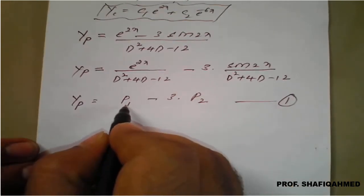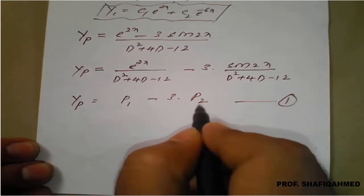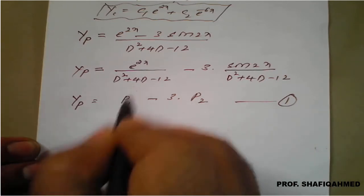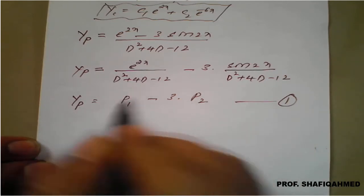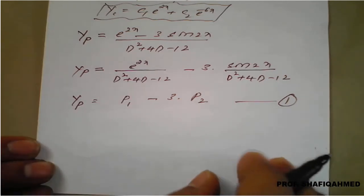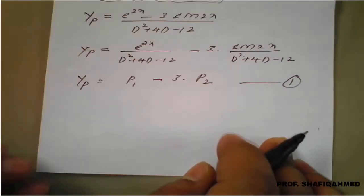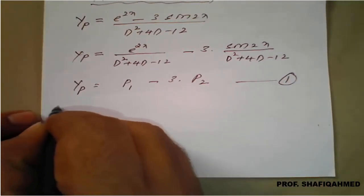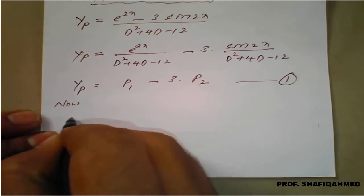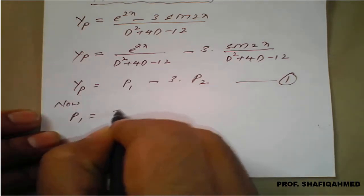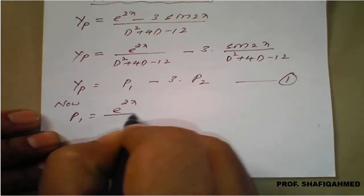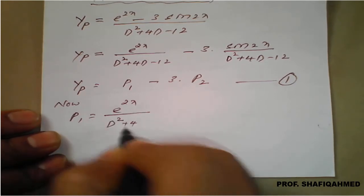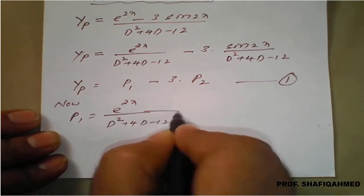This can be written as e raised to 2x divided by d squared plus 4d minus 12, minus 3 times sin of 2x divided by d squared plus 4d minus 12. So this is our yp. I will write it as yp equals p1 minus 3 times p2 — equation number 1. We will solve p1 separately and p2 separately, then apply in equation 1 to get the final particular integral.